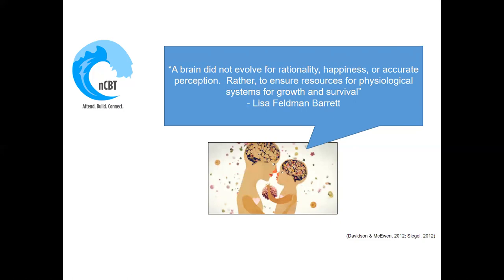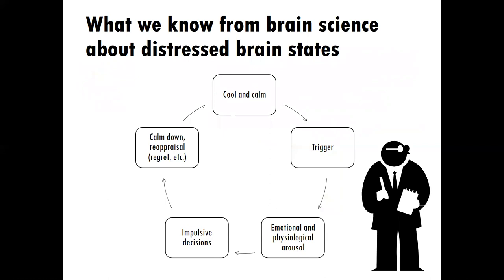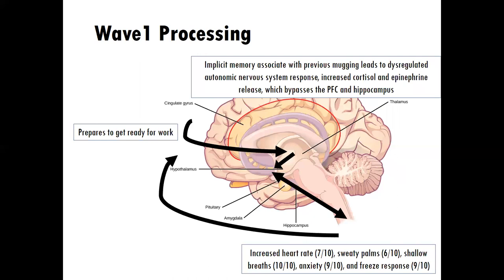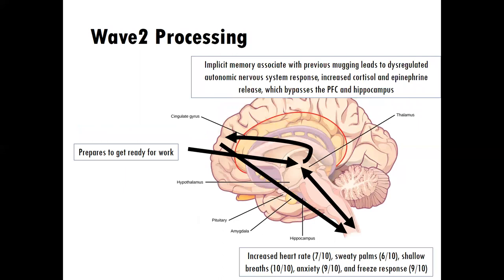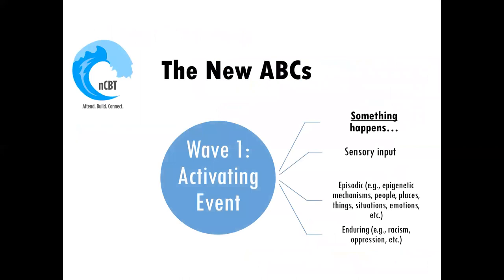We'll talk about what we know from brain science about distressed brain states — this will be a recall from our trauma course. Then we'll talk about wave one processing and wave two processing, and the new ABCs that NCBT proposes.